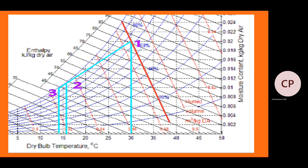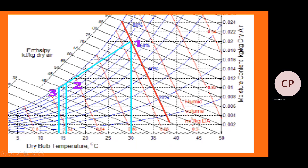Now we find the specific volume at point 1. The red inclined lines on the psychrometric chart indicate specific volume in m³ per kilogram of dry air — values like 0.84, 0.86, 0.88. We draw a parallel red line through point 1 and read off the value. The specific volume Vs1 = 0.884 m³ per kilogram of dry air.